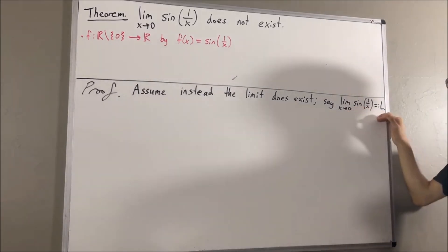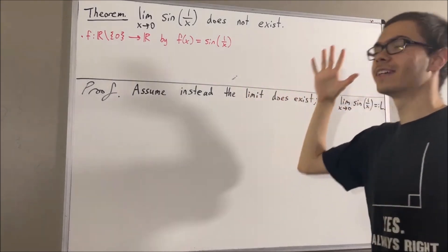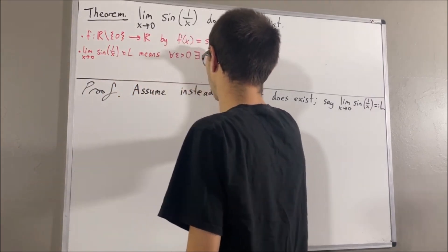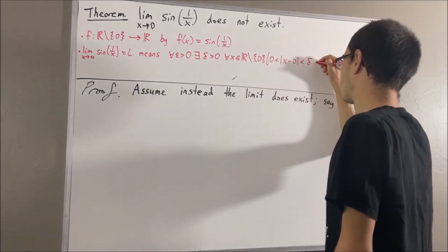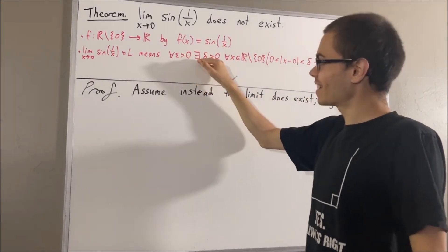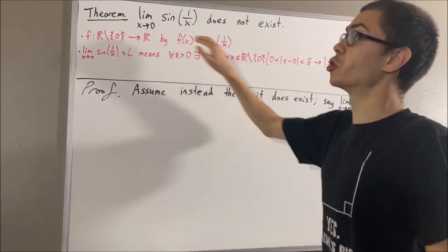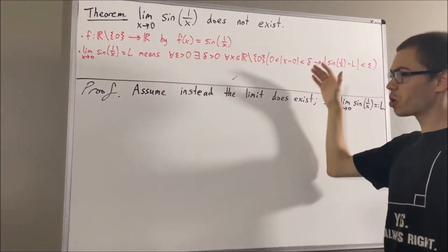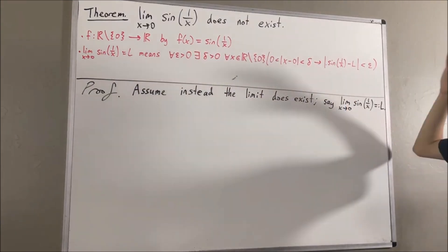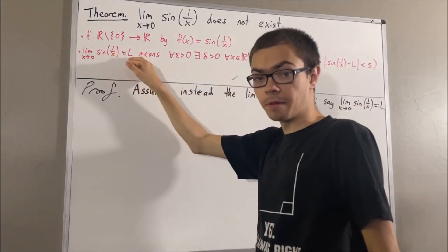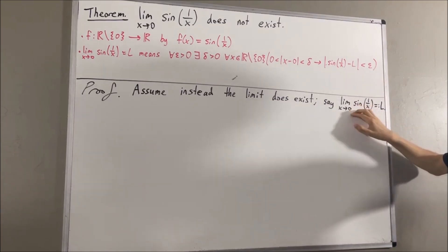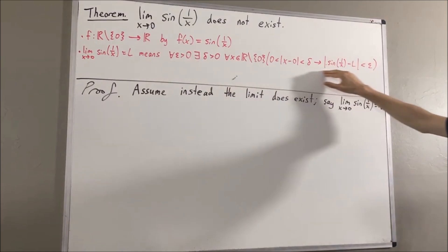What does this mean? By the epsilon-delta definition of the limit of a function, it means the following: for every epsilon greater than zero, there exists a delta greater than zero such that for all x in the domain of our function, if zero is less than the absolute value of x minus zero and less than delta, then the absolute value of sine of 1 over x minus L is less than epsilon. Because we're saying the limit of our function is equal to L, this means we're saying that this statement is true.